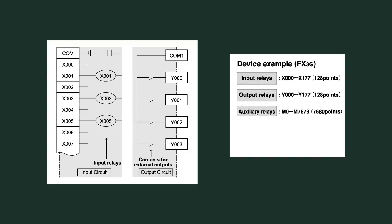Each terminal is allocated a device number like X0 or Y0. All internal devices are also allocated device numbers. For example, M0 is an auxiliary relay in the PLC, T0 is a timer, and C0 is a counter.